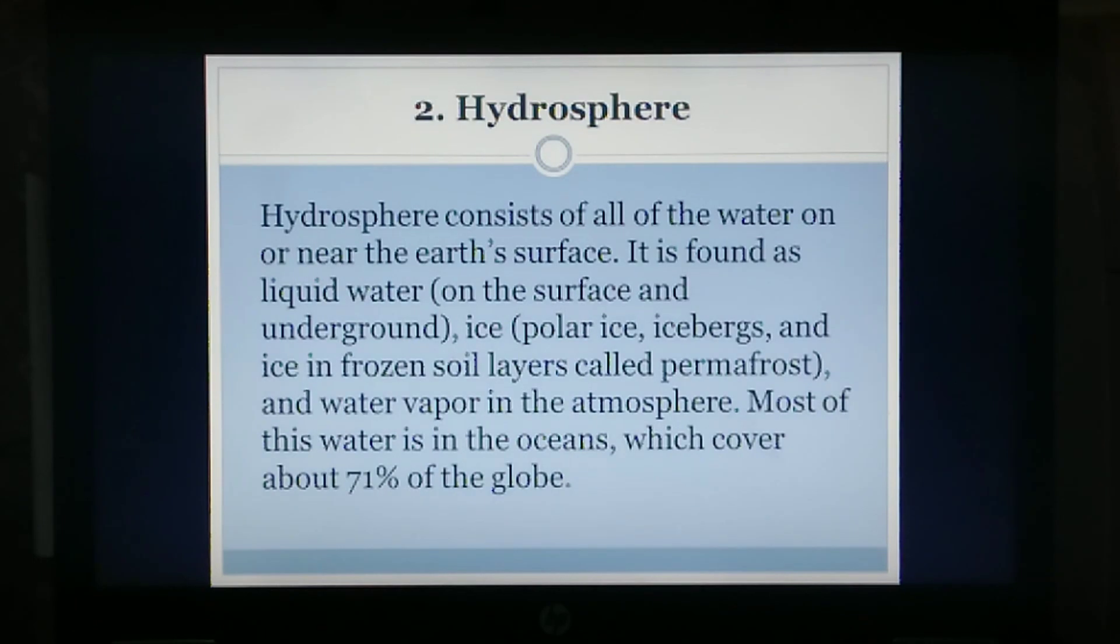Hydrosphere: The hydrosphere consists of all water on or near Earth's surface. It is found as liquid water on the surface and underground, ice (polar ice, icebergs, and ice in frozen soil layers called permafrost), and water vapor in the atmosphere.